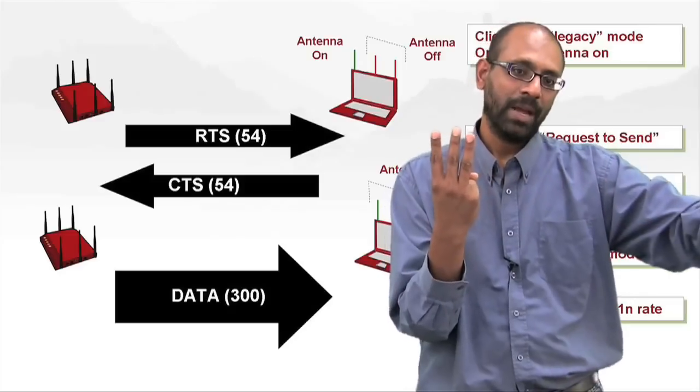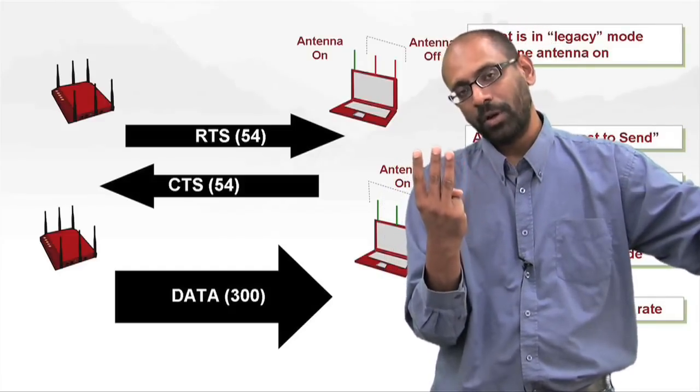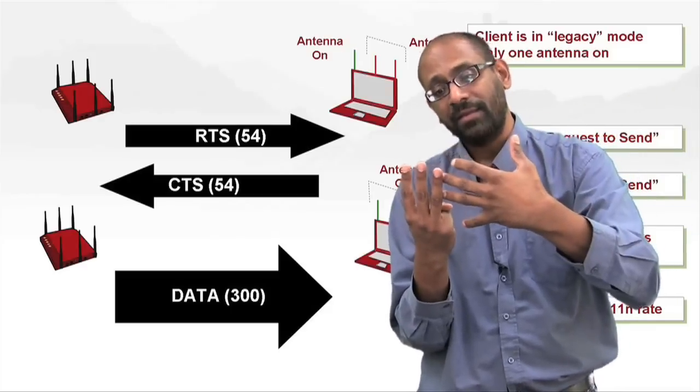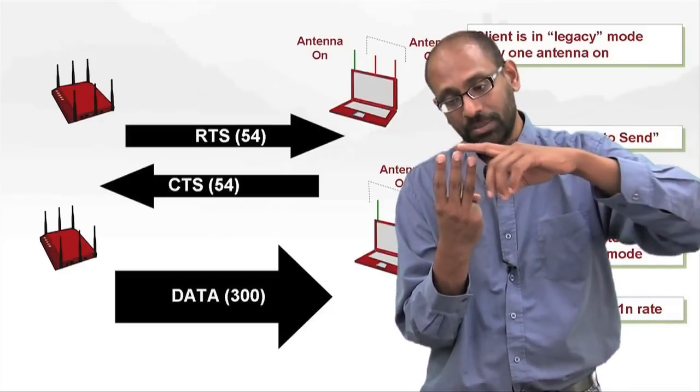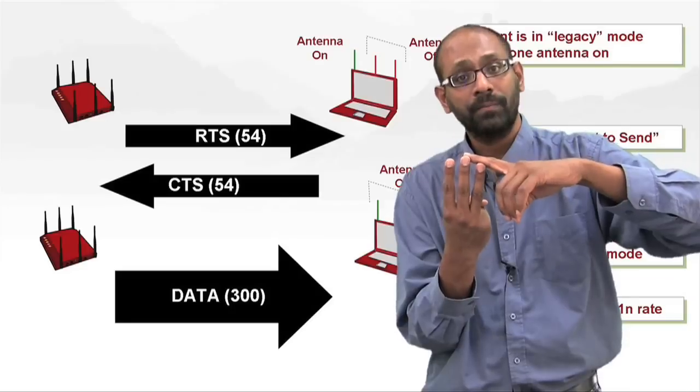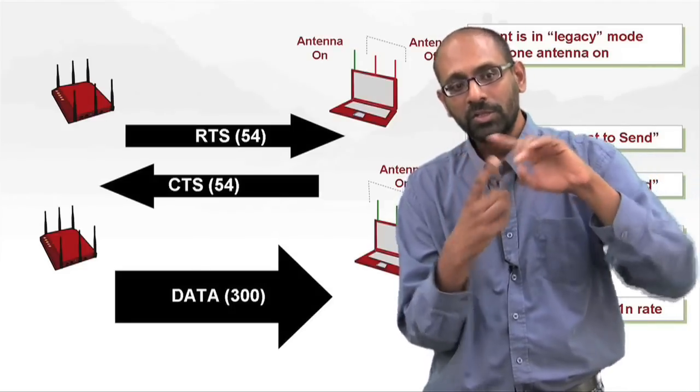And it sends a message back to this access point that says, okay, ready to receive. At this point, the access point can blast the full 11N traffic with the high data rates, and for the period of this traffic reception, all these three antennas are up. Once the transmission is done, these two shut down, the single antenna goes back.